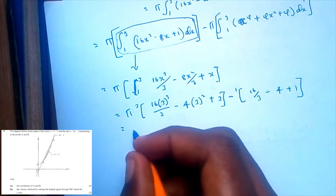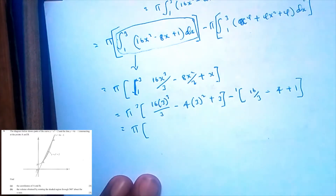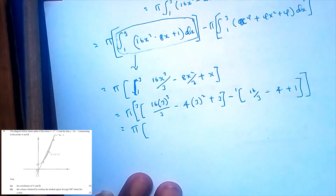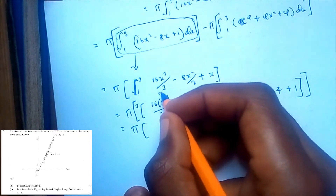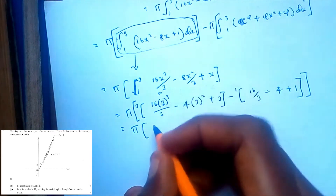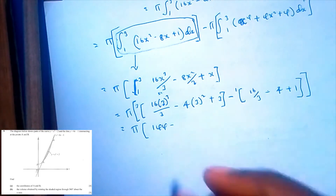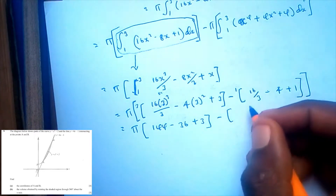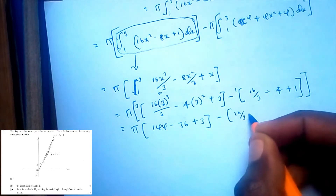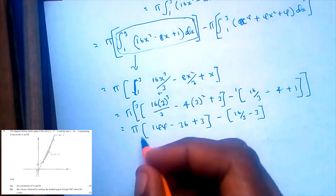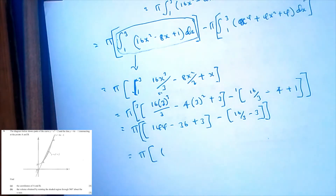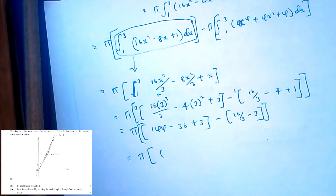So this is going to be pi. 3 cubed is 27, divided by 3 is 9; 9 times 16 is 144. Then 144 minus 36 — since 9 times 4 is 36 — plus 3, minus the lower value, which gives 16 over 3 minus 4 plus 1. So pi times 111 minus 16 over 3 minus 3, which is 21 over 3.